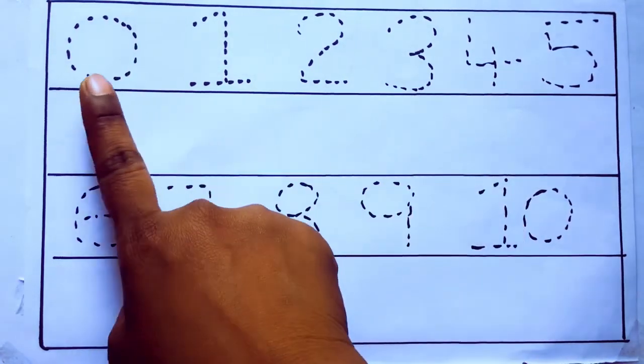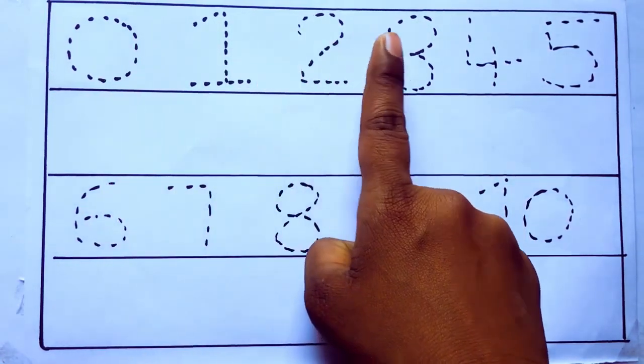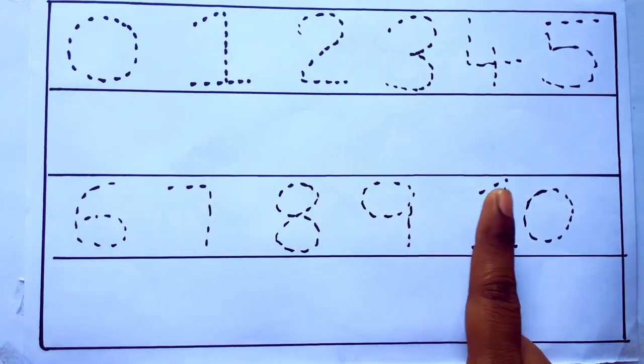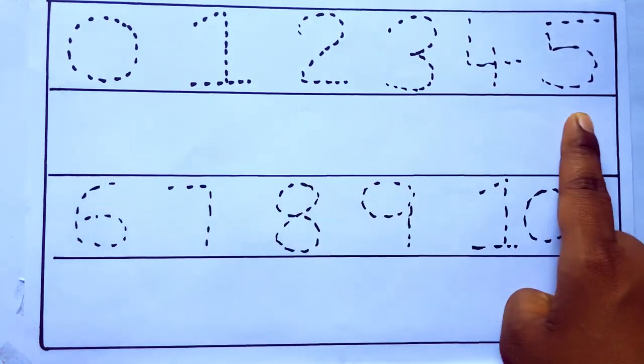0 to 10: 0, 1, 2, 3, 4, 5, 6, 7, 8, 9, 10 and rewriting the numbers.